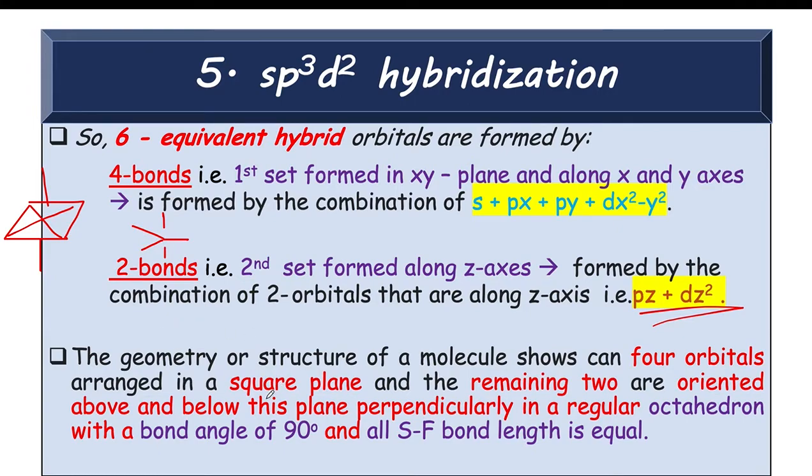So the geometry or structure of the molecule shows the square planar arrangement and the 4 phases that is the octahedron. Octa means 8 and hedron means phase. So 4 phases above and 4 phases below. So total there will be 8 phases. So we say this is known as octahedral geometry.